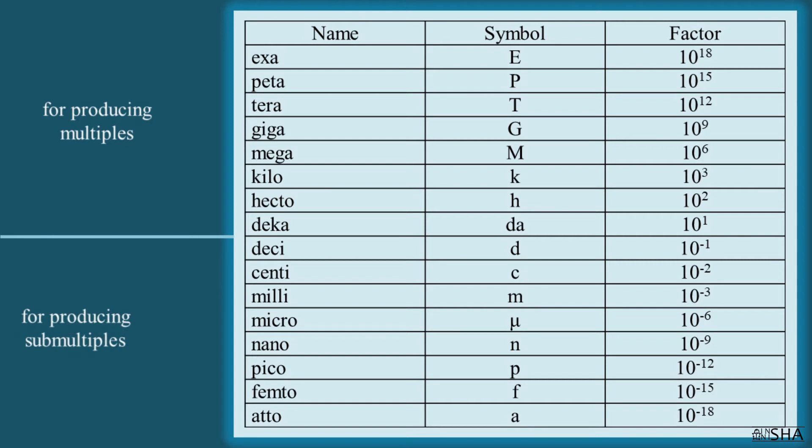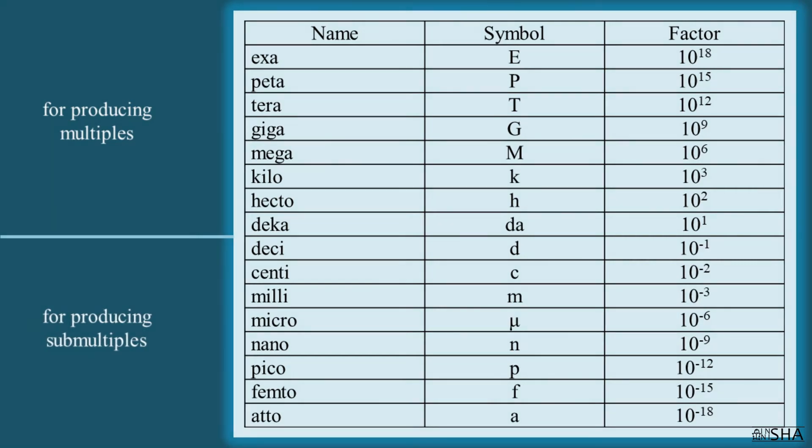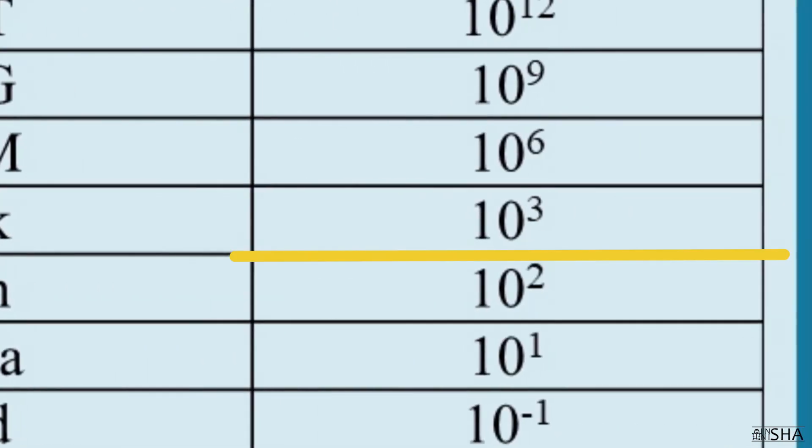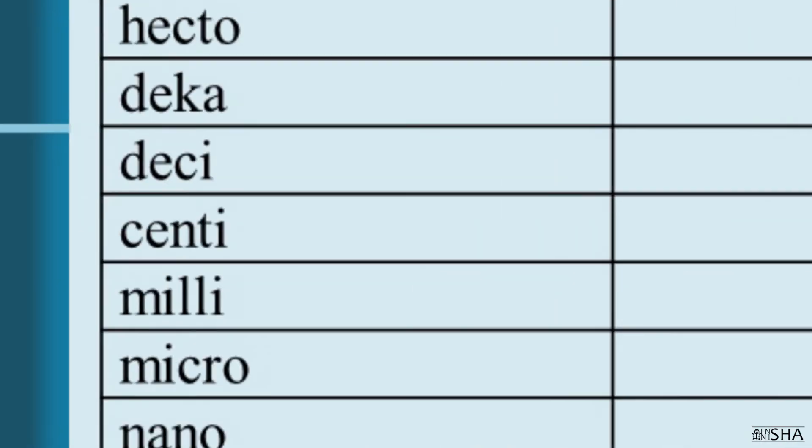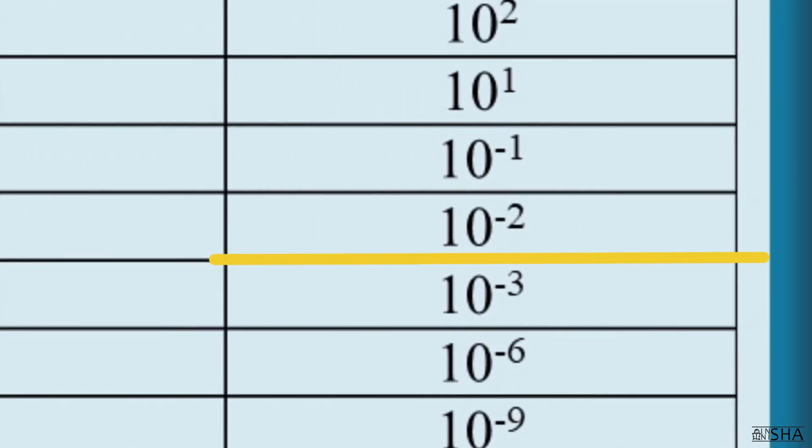Each prefix has its own factor. For example, the prefix kilo corresponds to the factor ten raised to the third power. The prefix centi corresponds to the factor ten raised to the negative two power.